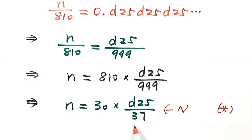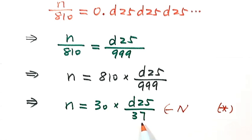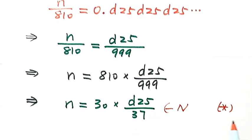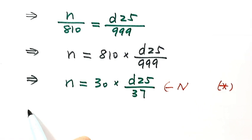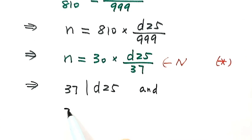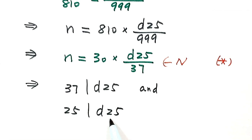Then because 37 is a prime number, and 37 and 30 don't have any common factor, that means 37 divides d25. And 25 also divides d25 because the last two digits are 25.